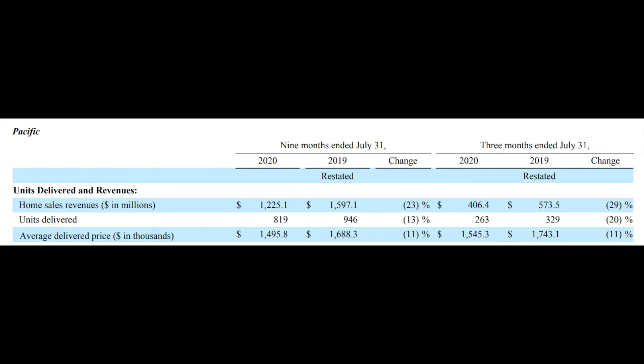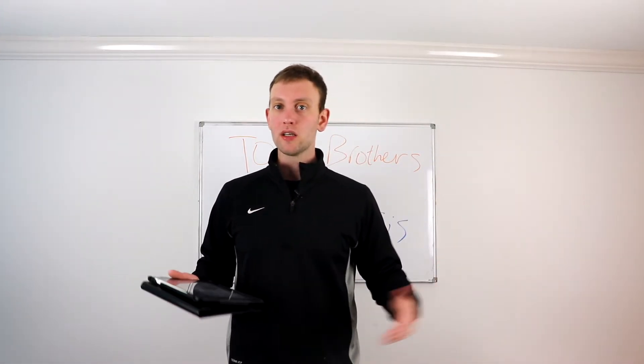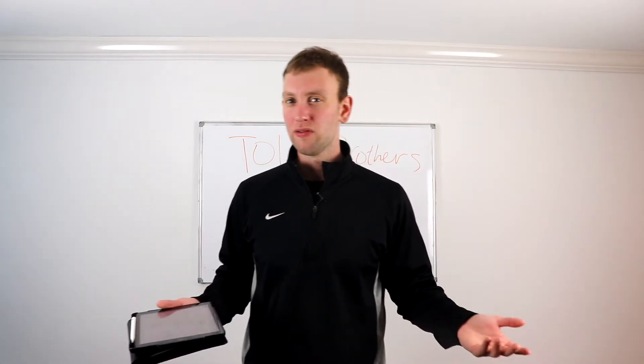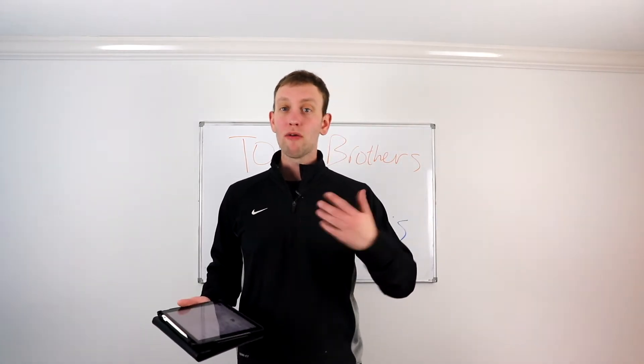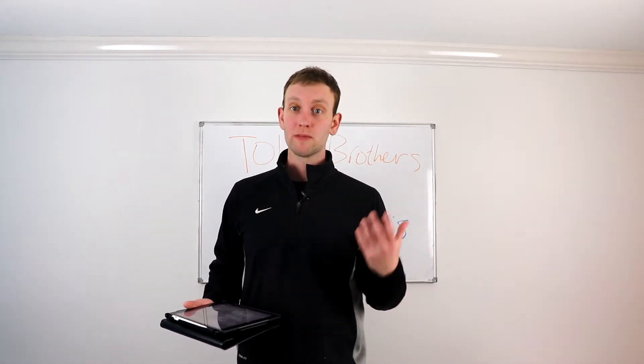And last but not least, the Pacific region. $573.5 million in 2019 compared to $406.4 million in 2020 for a 29% decrease. Like I said, guys, they're transitioning out of this. Keep that in mind. These numbers look bad, they're not as bad as they seem. 329 total units delivered in 2019 compared to 263 in 2020 for a 20% decline. And average delivered price, get this, $1.7 million compared to $1.5 million in 2020 for an 11% decline. Now, as I've mentioned two or three times already, they are transitioning out of this specific California market, mainly because it's expensive to live there. The environment's not that great in California. It doesn't seem like it's going to be getting better anytime soon. So I really like how they're transitioning out of this market and starting to focus on other markets personally as an investor.